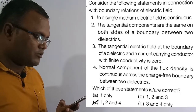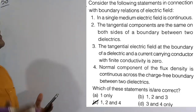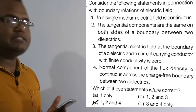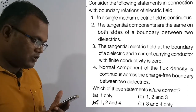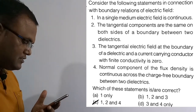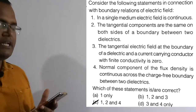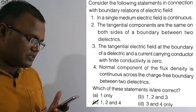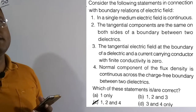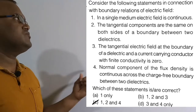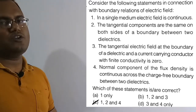Now the 56th question regarding boundary conditions of the electric field. Statement 1: in a single medium, the electric field is continuous. Statement 2: the tangential components are the same on both sides of a boundary between two dielectrics. Statement 3: the tangential electric field at the boundary of a dielectric and a current-carrying conductor with finite conductivity is zero. Statement 4: normal components of flux density are continuous across a charge-free boundary.